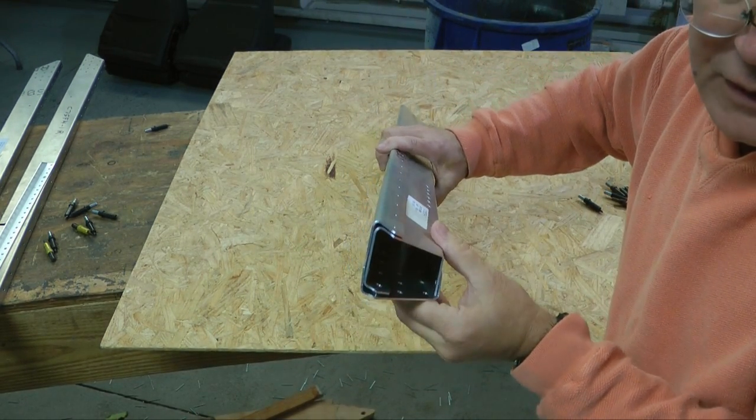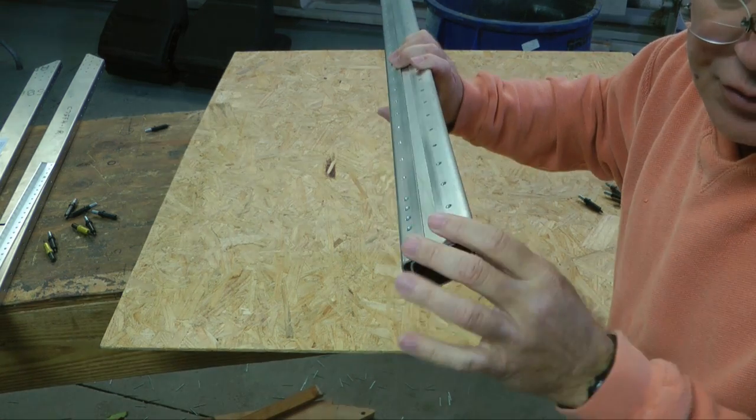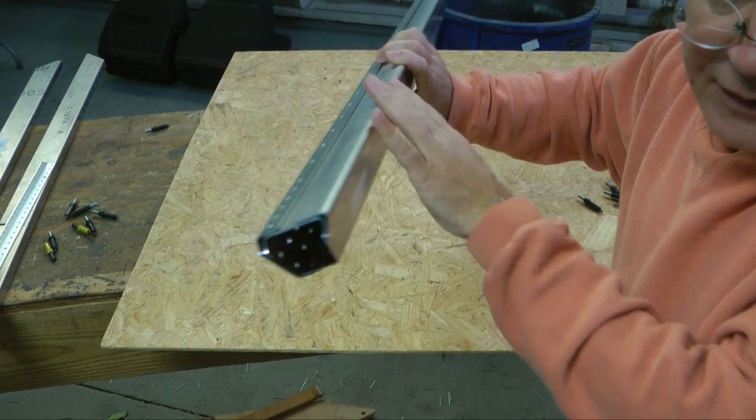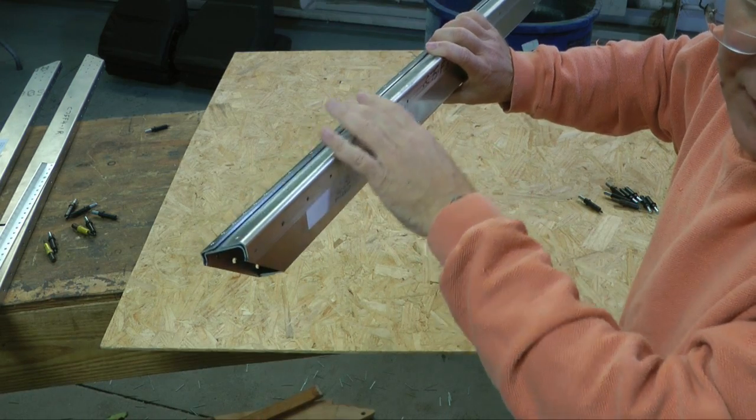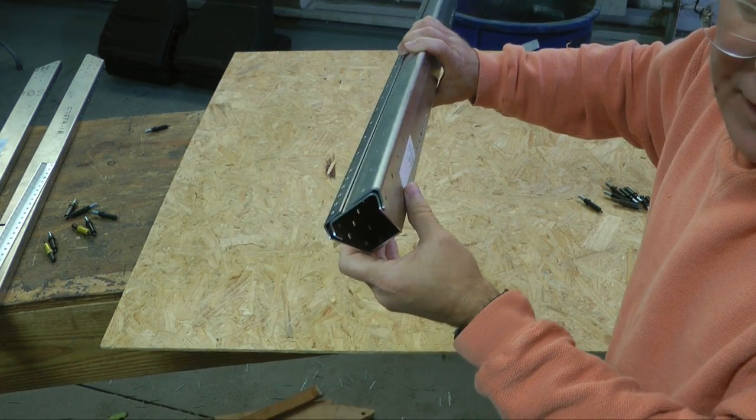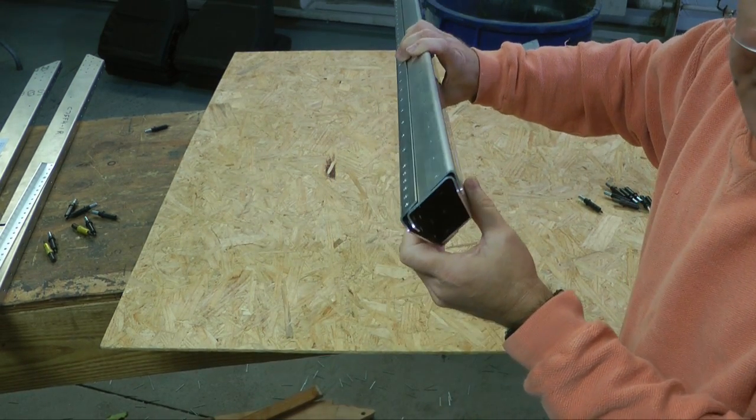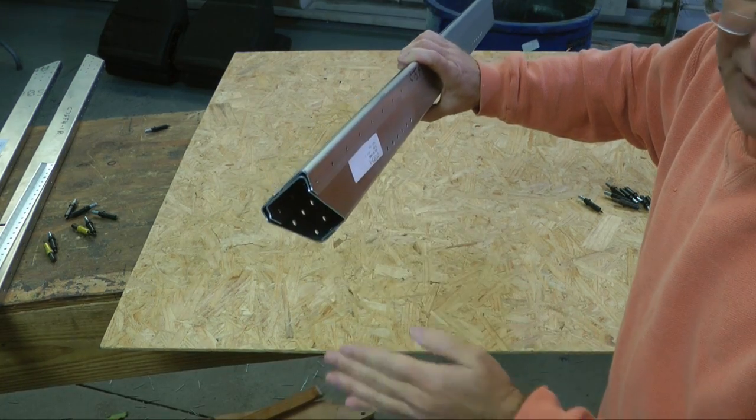I'm going to go ahead and put a few Clecos in this structure together so we basically have a box. And this is going to form the very top inside edge of the rear fuselage at the front. And then we'll add some more pieces onto it here.